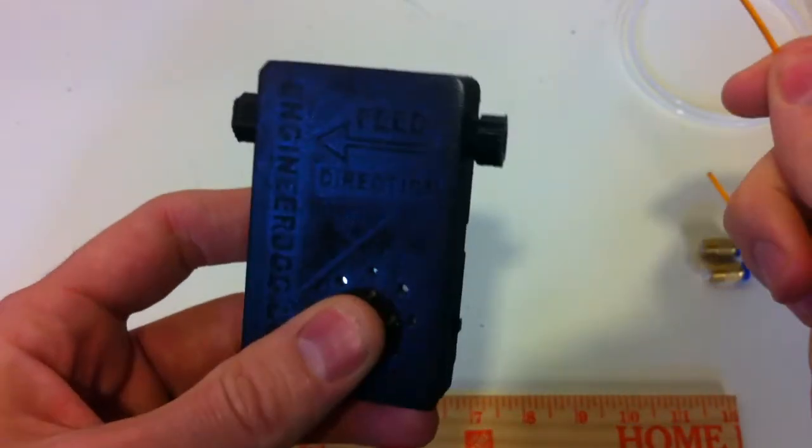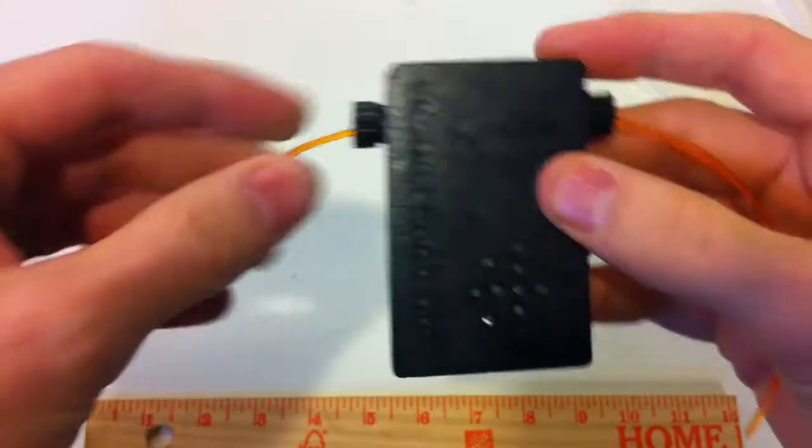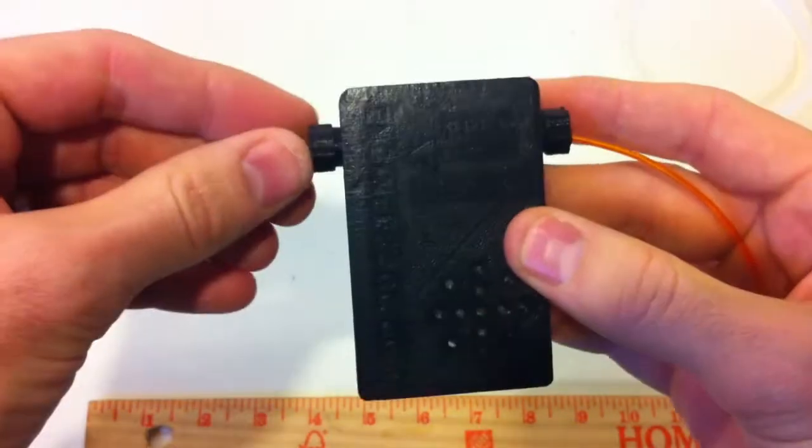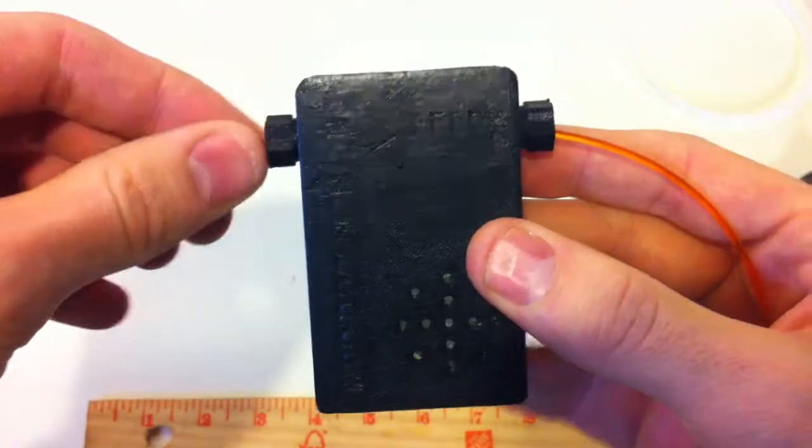What you do is you feed the filament through, you turn it on, and you would position this strategically, maybe 10 inches away from your extruder or at the beginning of your Bowden tube system.